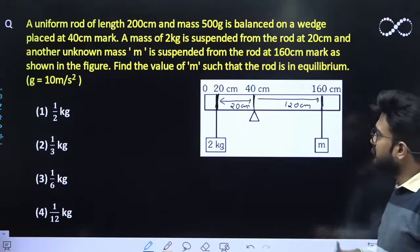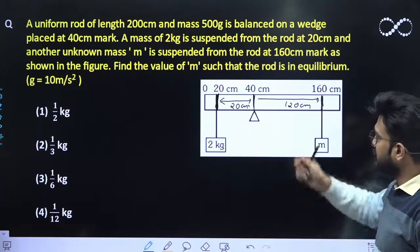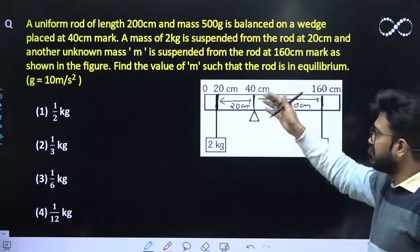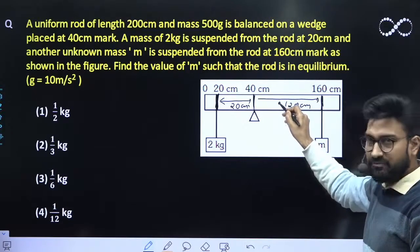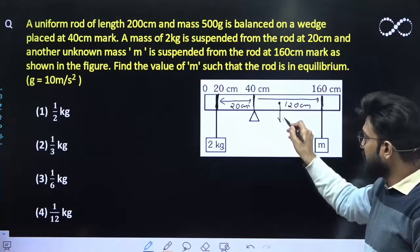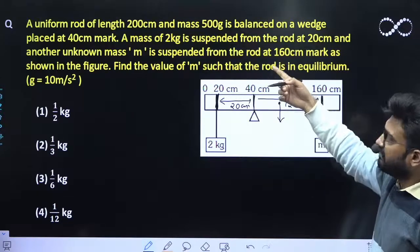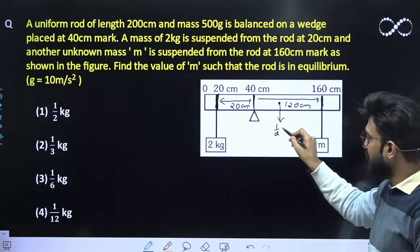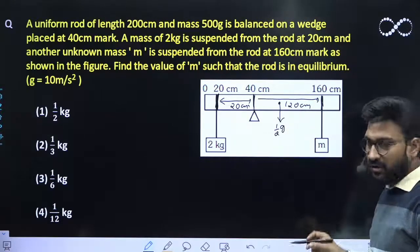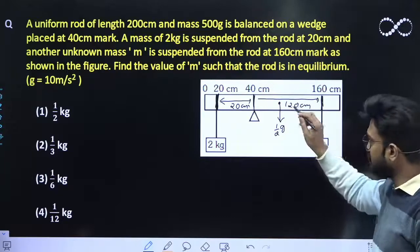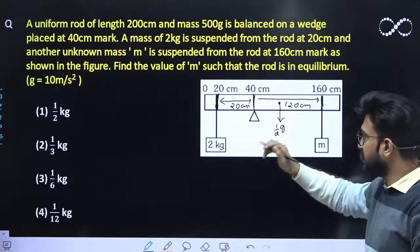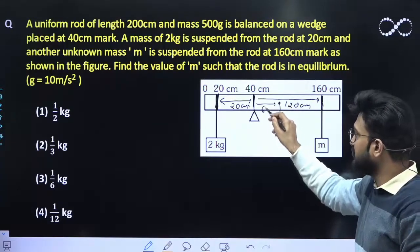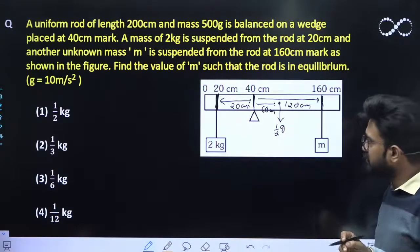The mass of the rod is also there. The mass of the whole rod must be concentrated at its center. Since it is 200 cm, the center point must be at its 100 cm mark, somewhere over here. This would be the center of mass of the rod. The mass of the rod is 500 grams, which is half kg. So half m into g - this would be the weight of the rod which will act at its center of mass. It must be at a distance of 60 cm from the suspension point.